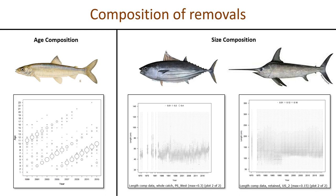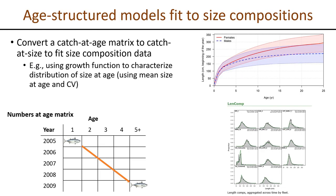For this reason we oftentimes don't have age composition data on the removals from the fisheries — we're often left with size composition data. This may also be due to the large-scale and international nature of these fisheries, which might make coordinating a production ageing program difficult. The fact of the matter is we are often only availed of size compositions, where many other marine fisheries have age compositions to inform their assessments.